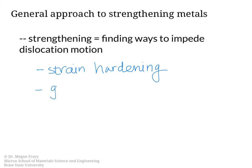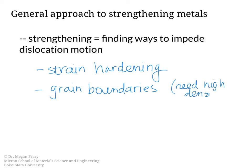The second method is through grain boundaries. Grain boundaries can act as barriers to dislocation motion, although in order to do this, you need a very high density of grain boundaries. So you really have to get to a pretty small grain size in order for that one to work.